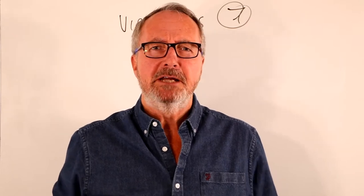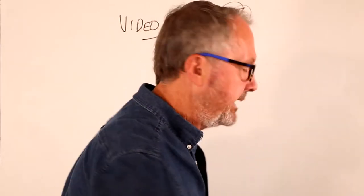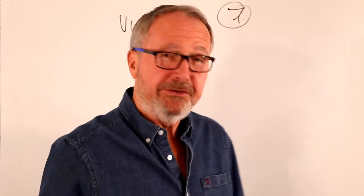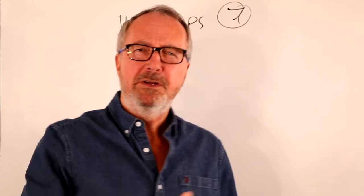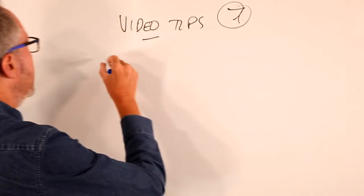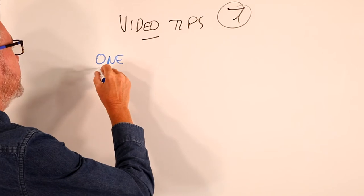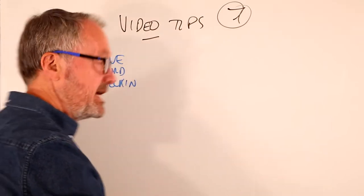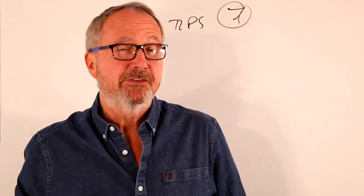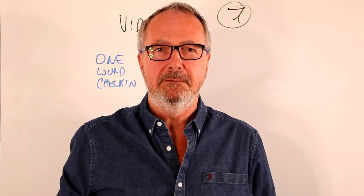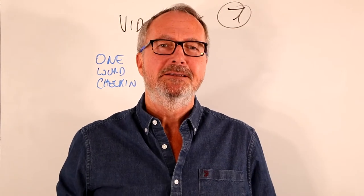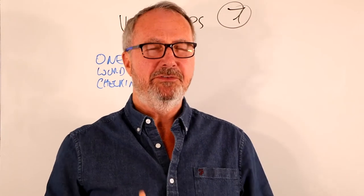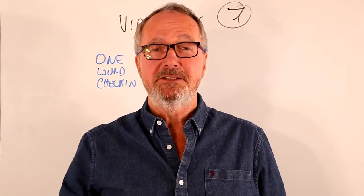Tip one: if you're doing a group meeting — a team meeting, an association meeting — and you want to introduce everybody, I like to do what I call the one-word check-in. Ask everybody to think of one word that describes how they're feeling. It could be excited, nervous, worried — whatever the word is. You've got to get into people's state of mind before you make any connection with them.